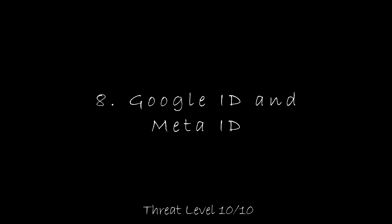Number eight: Google ID and Meta ID. Threat level 10 out of 10. The cookie and browser fingerprint problem isn't serious until you add the Google ID into the equation. The specific threat comes from the Google ID being stored in a cookie. When you are logged into Google on a browser, this Google ID will definitely be in a cookie. Any website with Google Analytics or Google AdSense will automatically detect this Google ID, and since the majority of all websites have Google Analytics or AdSense, Google will know practically every website you visit, specifically attributed to your Google ID.